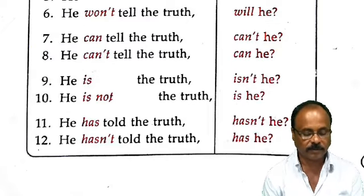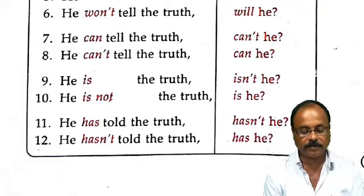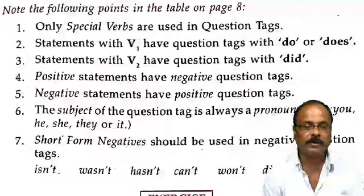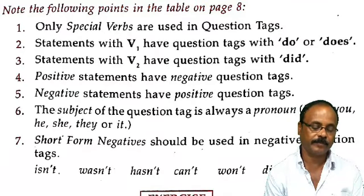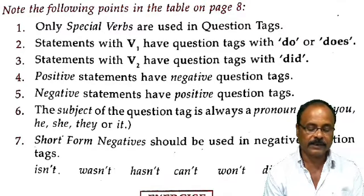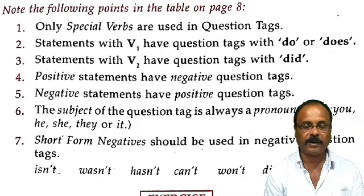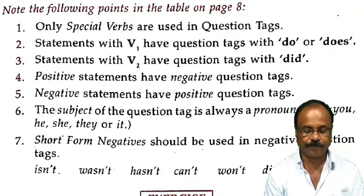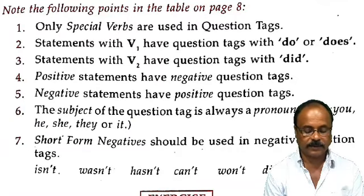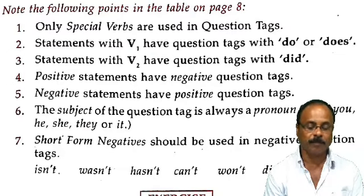There are certain notes. The following points are in the table on page 8. Number 1: Only special verbs are used in question tags. Number 2: Statements with V1 (bare form) have question tags with 'do' or 'does'. Number 3: Statements with V2 have question tags with 'did'. Number 4: Positive statements have negative question tags and negative statements have positive question tags.